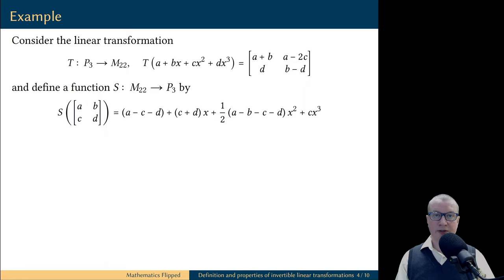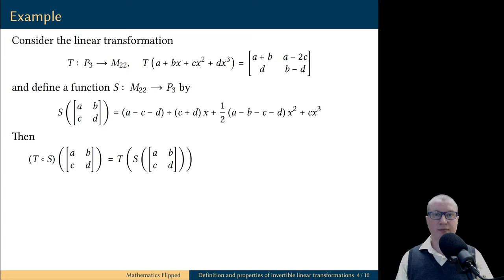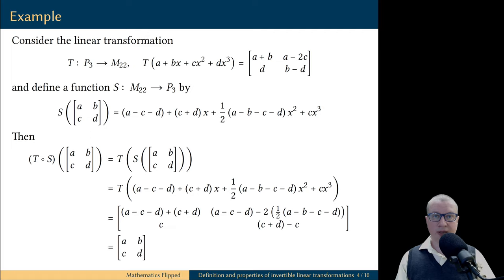Let me convince you that this function s is the inverse for the linear transformation t. First, let's compute what the composition t composed with s does to an input 2 by 2 matrix. This is t of s of the matrix. We have a formula for s — we know what s does to a given 2 by 2 matrix. The result is a polynomial, and we also know what t does to a polynomial — the result is a 2 by 2 matrix. A trivial algebraic simplification shows that this matrix is the same as the original input matrix. Therefore, t composed with s is the identity transformation on the vector space of 2 by 2 matrices.